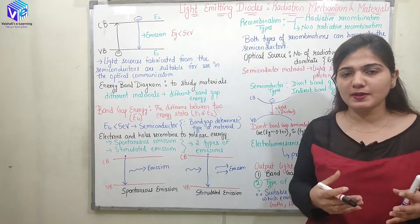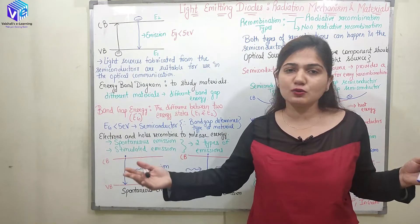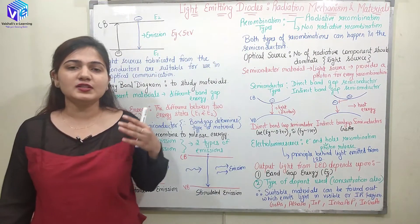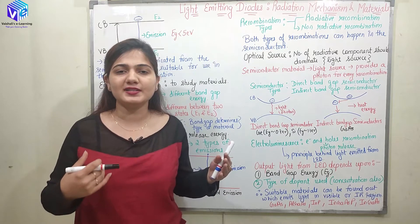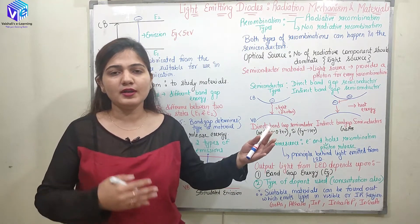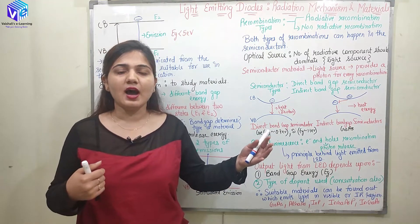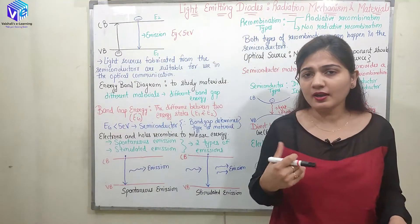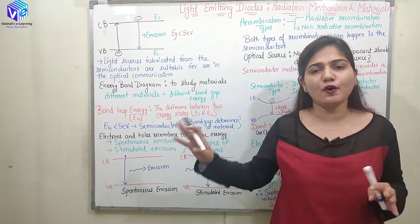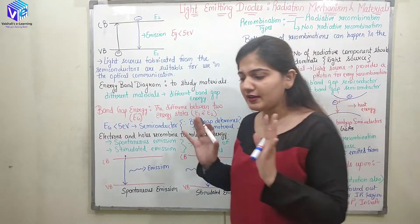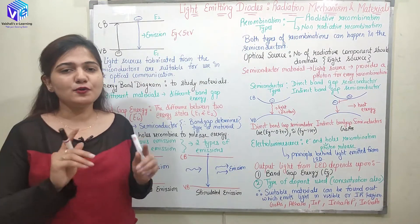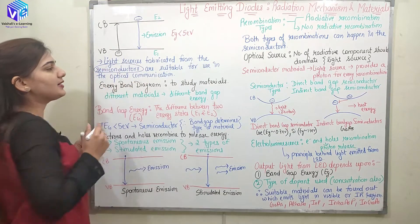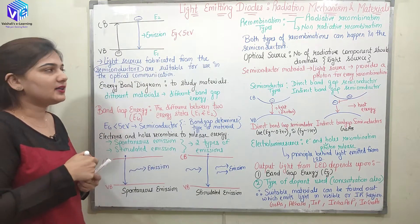The optical source should provide output in accordance with the input information — the input message signal should change the characteristics of the source. When the conductivity of the semiconductor is changed in accordance with the input message signal, I can get the output information in accordance with that signal. If I chose an insulator or conductor, the conductivity wouldn't vary according to the message signal. This is the basic reason why light sources are fabricated from semiconductors, as the semiconductor material is suitable for use in optical communication.